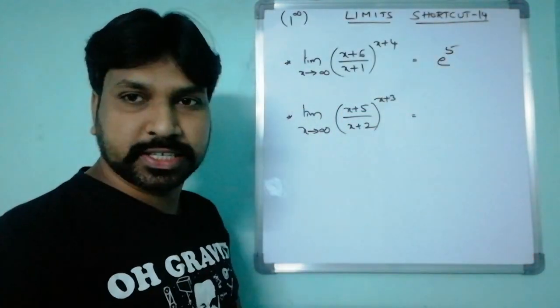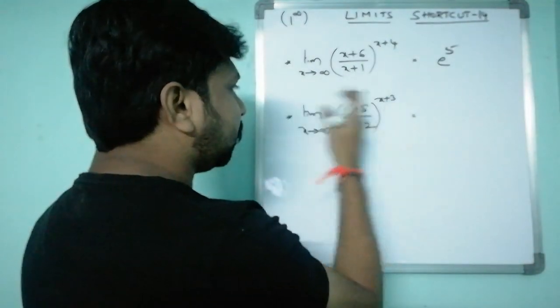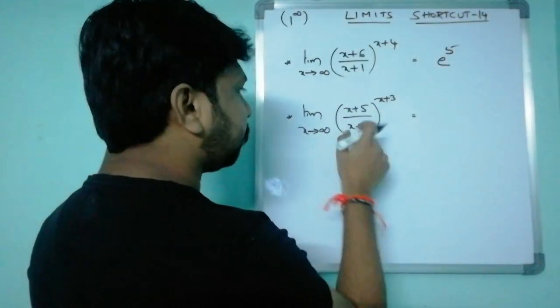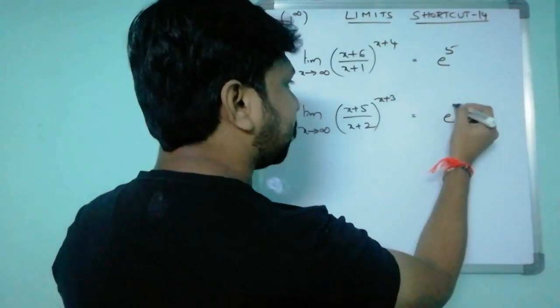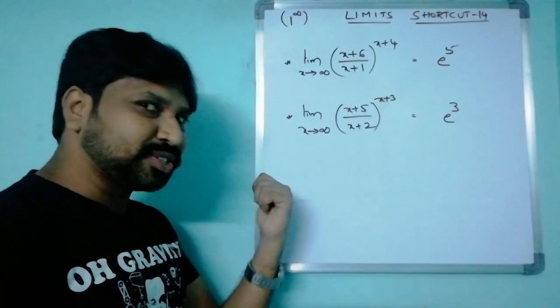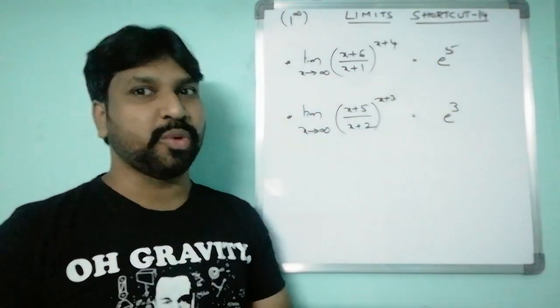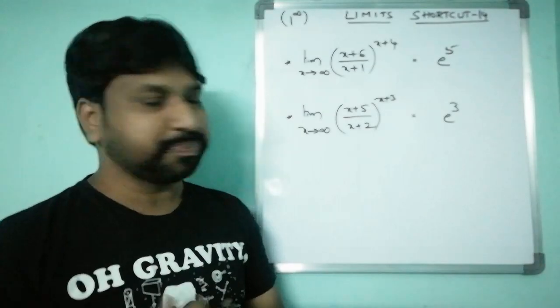Now for the next example with the same formation, the answer is e^(5-2) = e^3. Let me now reveal the shortcut formula very quickly.